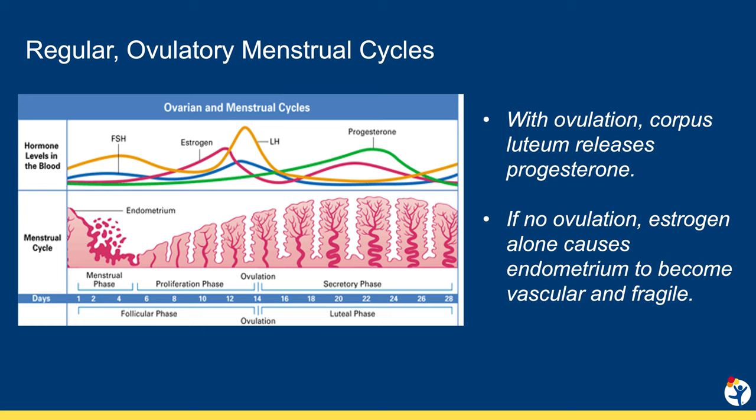In the absence of ovulation, the lining of the uterus is only exposed to estrogen, and it becomes more thick and vascular. This can result in a chaotic pattern of bleeding and periods that are heavy and prolonged.